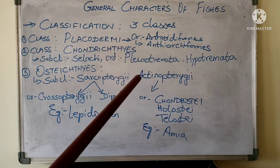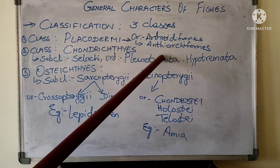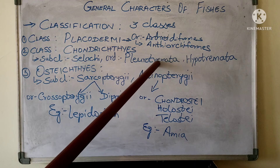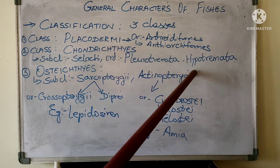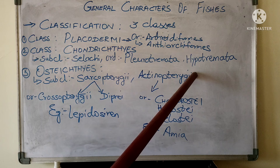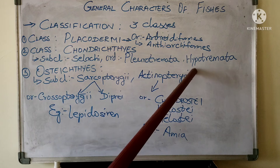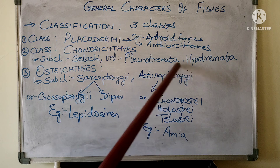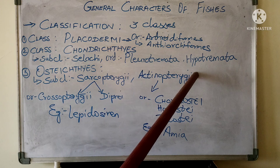In Pleurotremata, gill slits are present on the lateral sides and the tail is heterocercal. In Hypotremata, gill slits are ventral in position, spiracles are large, and the body is dorsoventrally flattened. In Hypotremata, pectoral fins fuse with the head on the sides of the body. An example is the rays.